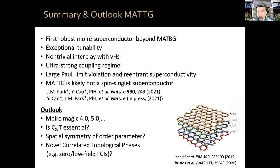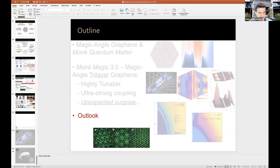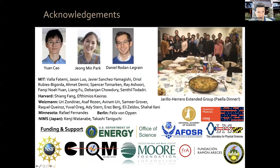In summary, magic angle twisted trilayer graphene is the first robust moiré superconductor beyond the bilayer. It has exceptional tunability, a non-trivial interplay with van Hove singularities, realizes the strong coupling regime, and shows large Pauli limit violation and reentrant superconductivity — meaning it's very likely not a spin-singlet superconductor. For outlook: this work gives a recipe to make more and more layers — Moiré Magic 4.0, 5.0. The role of C₂T symmetry, the symmetry of the order parameter, and novel correlated topological phases at zero or low field remain to be investigated. This work was done by my grad student Jane Park and Daniel Rodin, with collaborators at MIT and elsewhere.